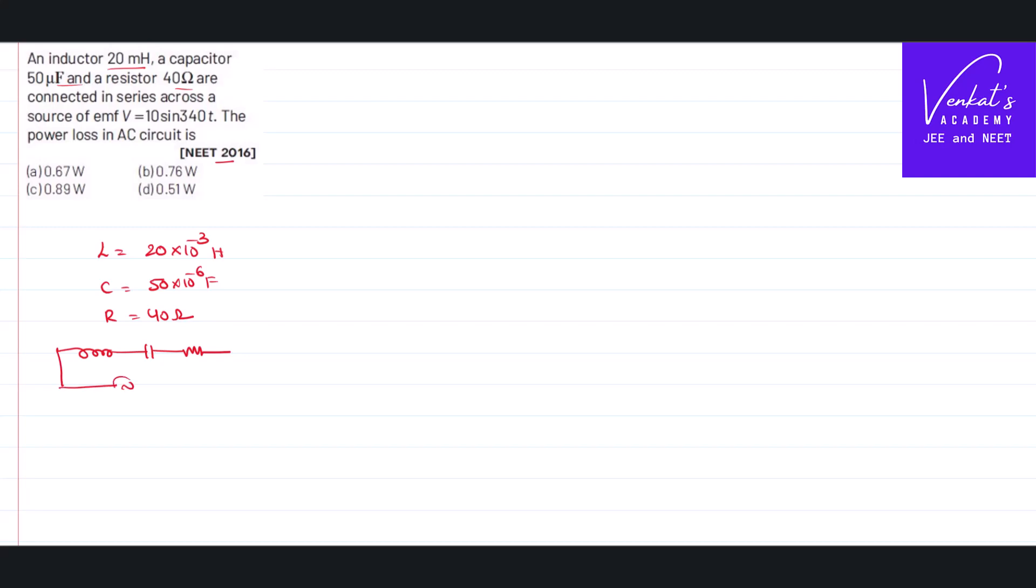The circuit is connected to an AC source as shown, where the voltage is given as 10 sin 340t. It is in the format V = V₀ sin ωt. That implies V₀ (peak voltage) is 10 volts and the angular velocity of that AC wave is 340 radian per second.